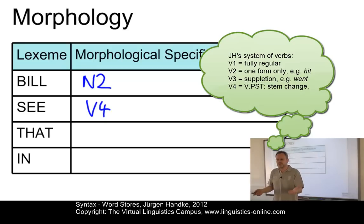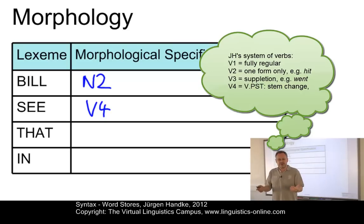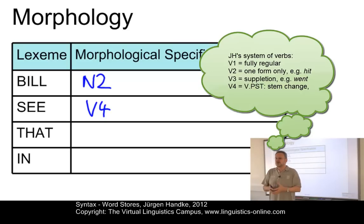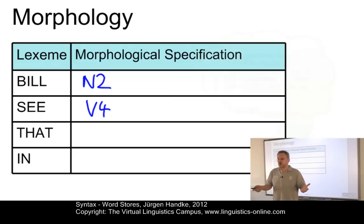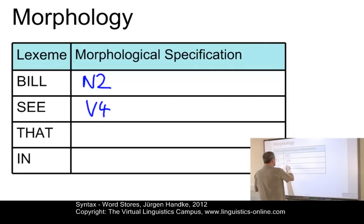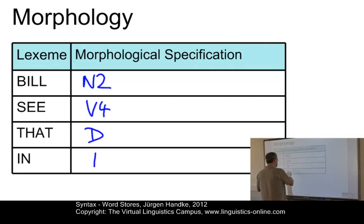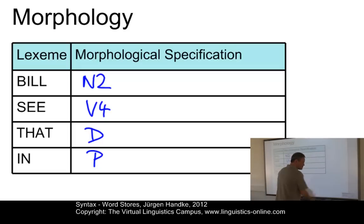Here we want to indicate that verbs of this particular type have an irregular past form, which has to be retrieved from elsewhere. So, 'that' is a determiner and 'in' is a preposition. This is the morphological information.